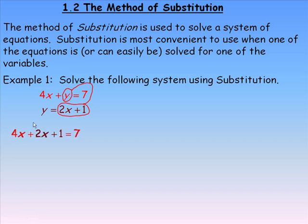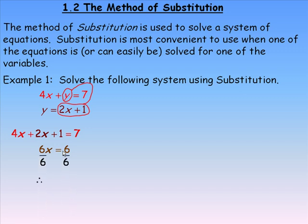Here's the first equation with the 4x. In place of y, I'm putting 2x plus 1, because that's what y equals, and then equals 7. Now we have one equation with just one variable, so we can solve for x. 4x and 2x is 6x. Subtracting 1 from both sides gives 7 minus 1 equals 6. Dividing out the 6, we get x equals 1.